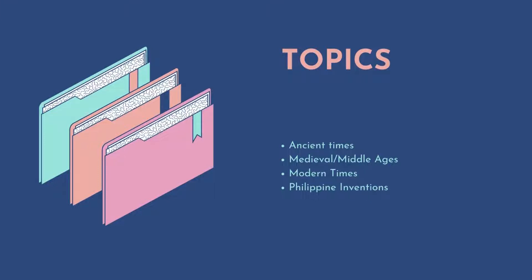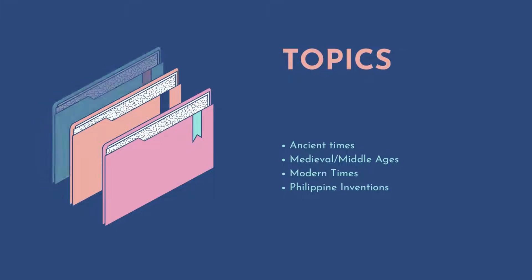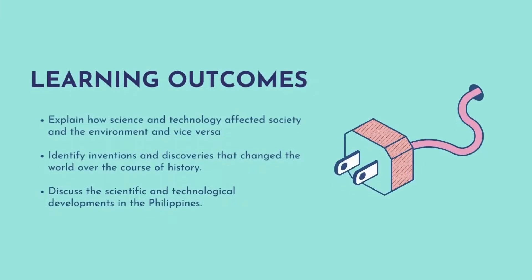Please prepare your notes so you can take down important words from this discussion. After this chapter, you will be able to explain how science and technology affected society and the environment and vice versa, and identify inventions and discoveries that changed the world over the course of history.